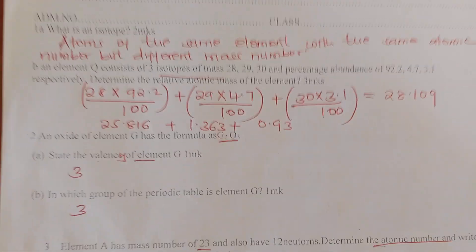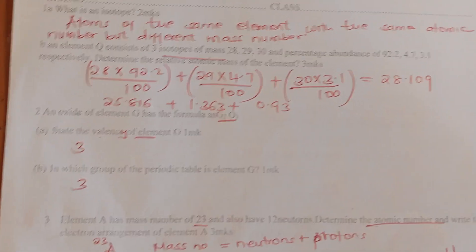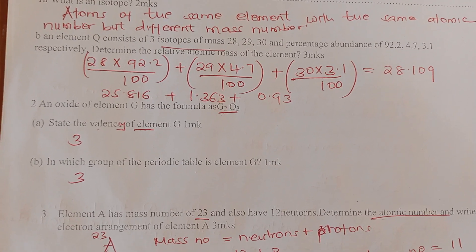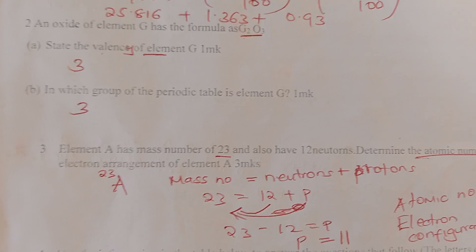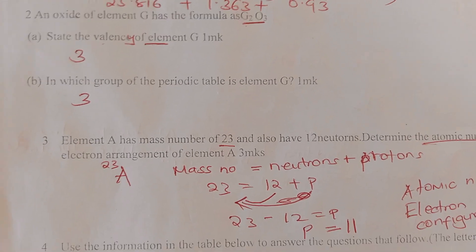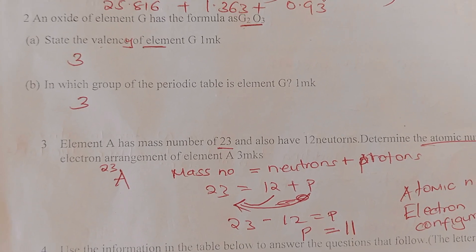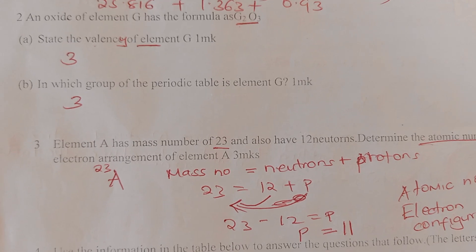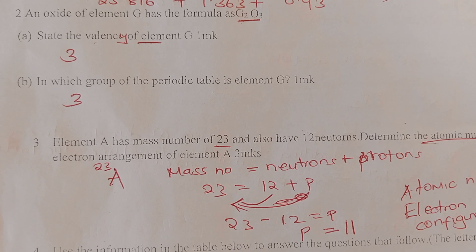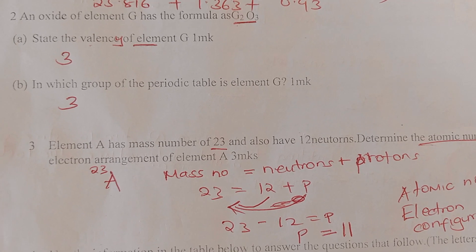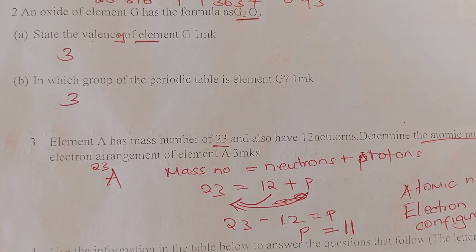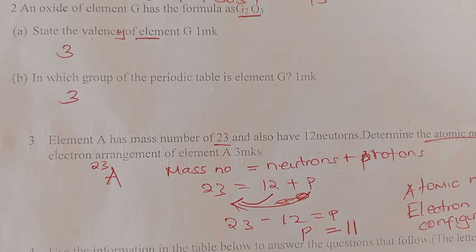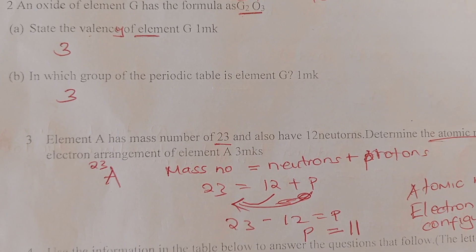This shows that the relative atomic mass is closer to the most abundant isotope. For number two, an oxide of element G has the formula G2O3. The valency of element G must be three, because the valences have already been exchanged. Therefore, element G is in group three of the periodic table.